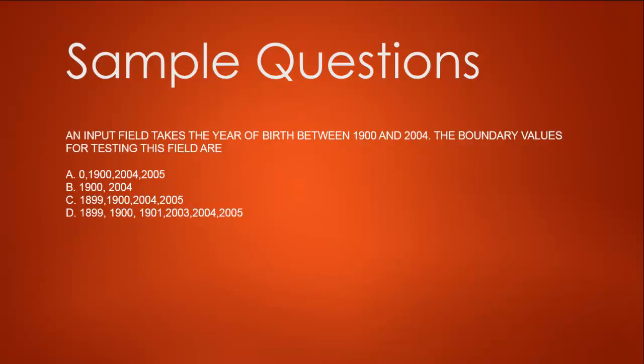Next question: an input field takes the year of birth between 1900 and 2004. The boundary values for testing this field are: A) 0, 1900, 2004, 2005; B) 1900, 2004; C) 1899, 1900, 2004, and 2005; D) 1899, 1900, 1901, 2003, 2004, 2005.